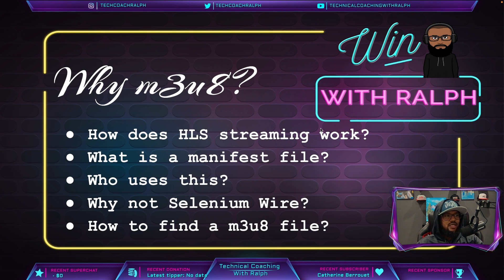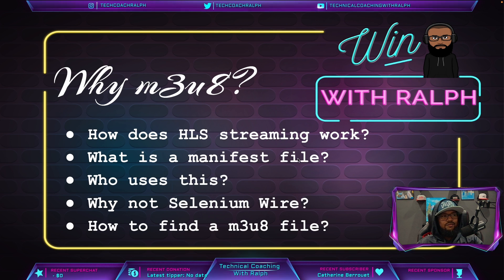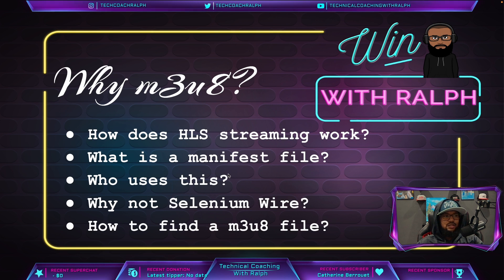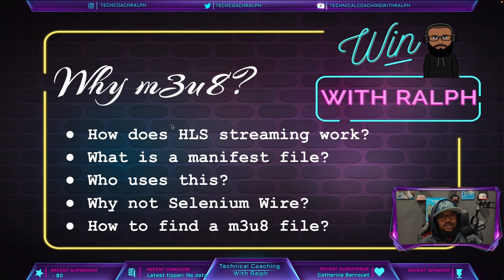What is a manifest file? The manifest file is the file that contains all the data about the video that's going to be played back. There can be what they call a variant manifest that loads different qualities of video, and then in those quality manifests there will be the actual video files that need to be played. Who uses this? Pretty much any video company nowadays is using m3u8 files and HLS streaming, because it allows the video to play back faster — you don't have to wait for an entire MP4 or MOV file to load before it can start playing.